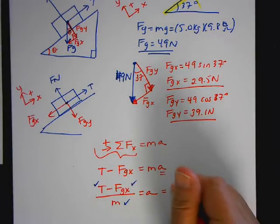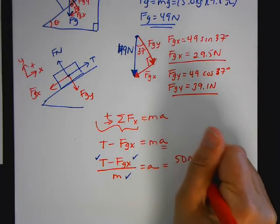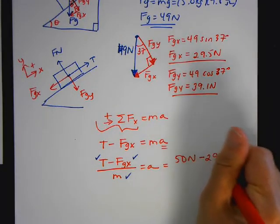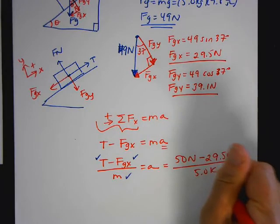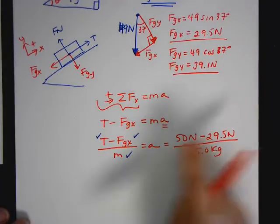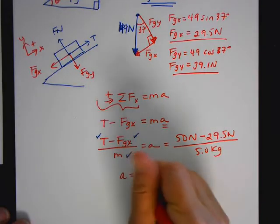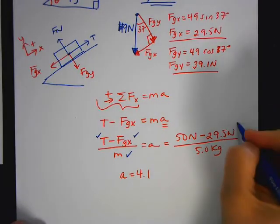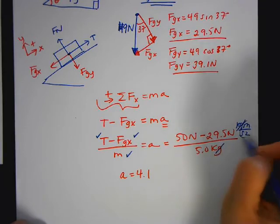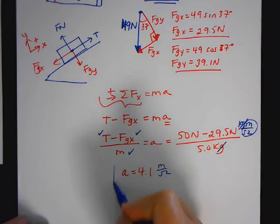So this problem is easier than I thought. So I have 50 newtons minus 29.5 newtons divided by 5 kilograms. So 50 minus 29.5 does that. So A is equal to 4.1. And remember, a newton is a kilogram meter per second squared. So this kilogram cancels with that, and I end up with meters per second squared, which is my correct unit for acceleration.